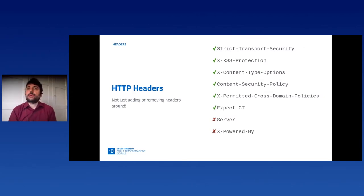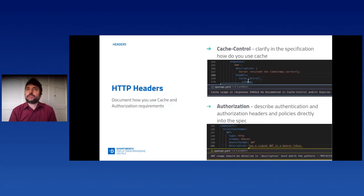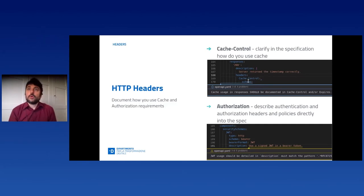Let's speak now about HTTP header security. It's not just about adding or removing specific headers like the ones we list here. For example, it is very important to document how you intend to use caching — here we can create an automatic check — or to specify the rules you want to enforce when you use authorization bearer tokens. In the specification, you should explain why and how you intend to use this kind of bearer tokens.